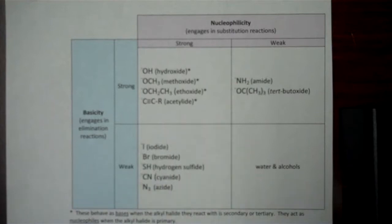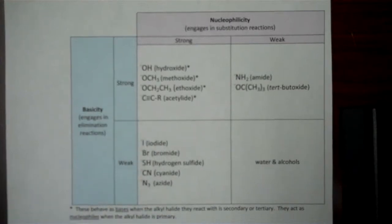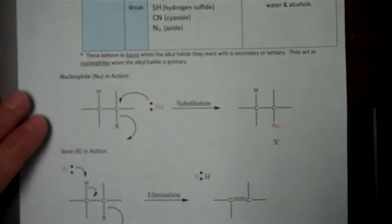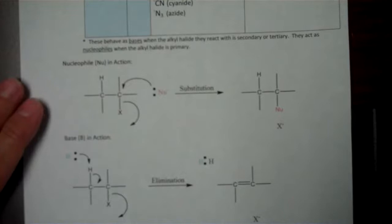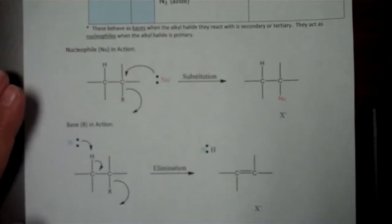This chart shows four categories: strong and weak nucleophiles, and those same substances can be either strong or weak bases. If you look at the bottom half of this page, it shows what the distinction is between something behaving as a nucleophile versus something behaving as a base.